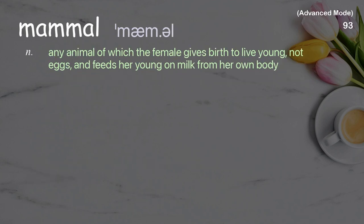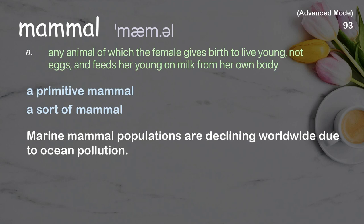Mammal: any animal of which the female gives birth to live young, not eggs, and feeds her young on milk from her own body. Examples: a primitive mammal, a sort of mammal. Marine mammal populations are declining worldwide due to ocean pollution.